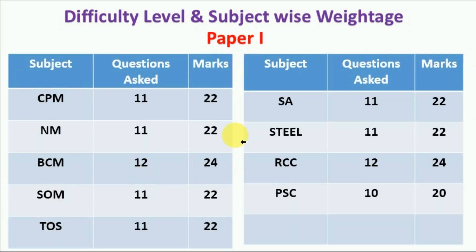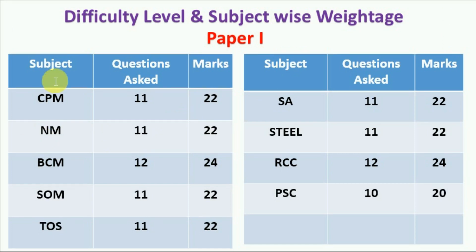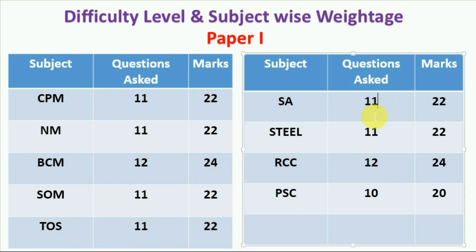Now the subject-wise weightage of Paper 1: Construction Planning and Management was asked for 22 marks with 11 questions. There were 11 questions of Numerical Methods, 12 questions of Building Construction and Materials, 11 questions of Strength of Materials, 11 questions of Theory of Structures, 11 questions of Structural Analysis, 11 questions of Steel Structures, 12 questions of RCC, and lastly 10 questions of Pre-stress.